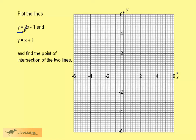So consider y equals 2x minus 1. We need a table of values. We are going to take 3 values, although we only strictly speaking need 2, for a straight line.